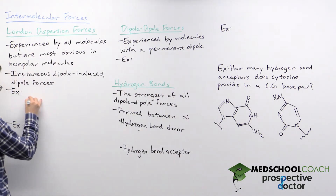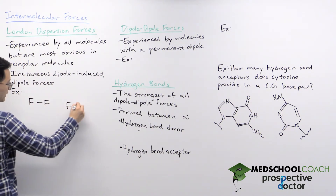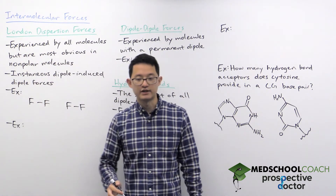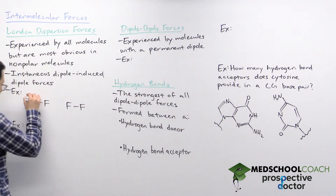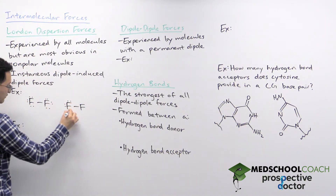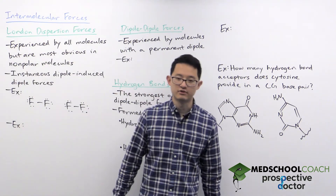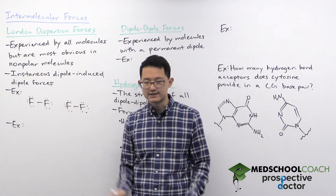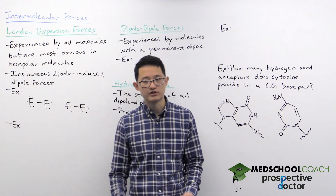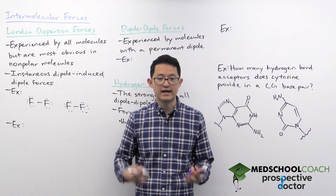We can have two nonpolar molecules like diatomic fluorine. If you look at these two fluorine molecules, what you can appreciate is that these molecules are nonpolar, which means they are not charged — they do not have charge separation. So in that case, if you don't have one side of the molecule with a positive charge and the other with a negative charge, you might wonder how you can possibly get an electrostatic interaction.